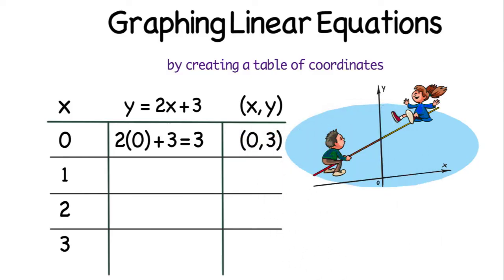My second x value that I chose was 1. 2 times 1 is 2, plus 3 is 5, so the y value that will be paired with the 1 will be 5. So 1, 5 will be my next coordinate.